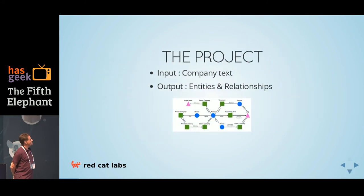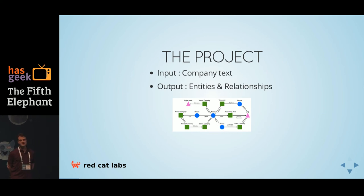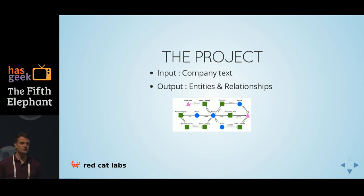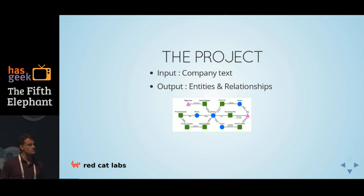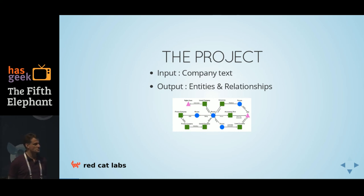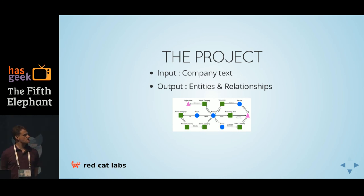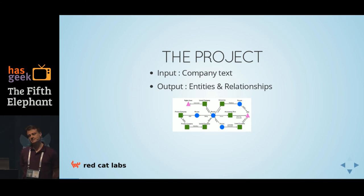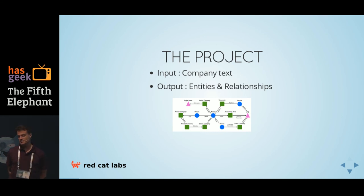The project: the company essentially takes text from companies, outputs a bunch of entities and relationship tuples. Their product, which they already sell to clients, is a complete knowledge graph for the Singapore financial markets. It has all the people, all the companies, their relationships, who's a director, who studied where, subsidiaries, listings, auditors, a whole bunch of stuff. At the moment they go through text and type it in manually, so this is an opportunity to get some productivity gains.